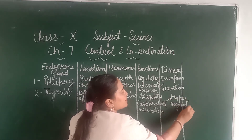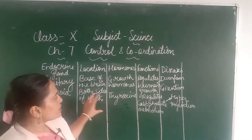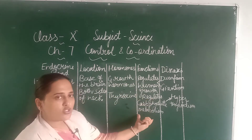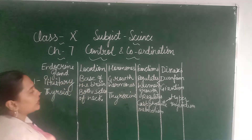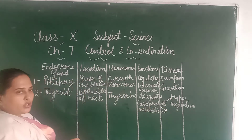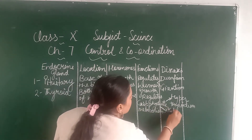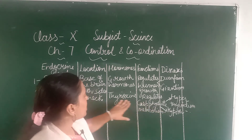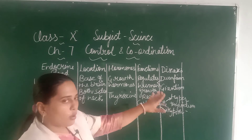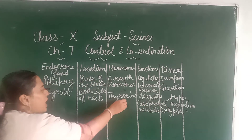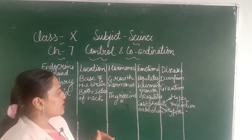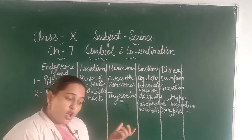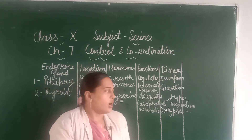In hyperthyroidism, the person becomes too thin, because when thyroxin is secreted in excess, whatever fat you intake gets digested completely, so the person becomes very thin. If thyroxin is secreted in less amount, the condition is known as hypothyroidism, which is a very common problem nowadays. In hypothyroidism, fat digestion doesn't happen properly, so all the fat gets deposited in the body and the person becomes too fatty.